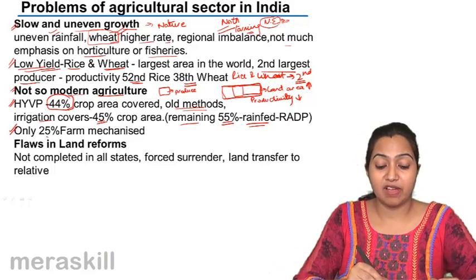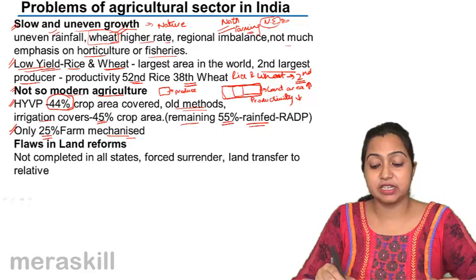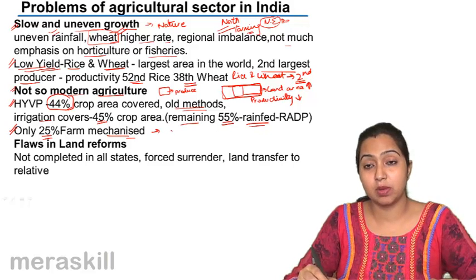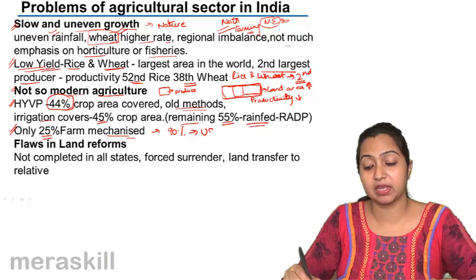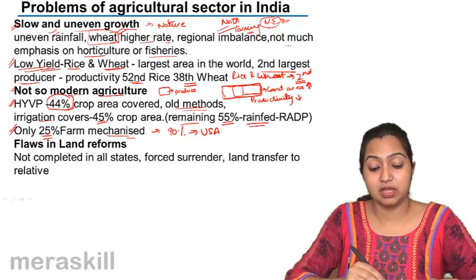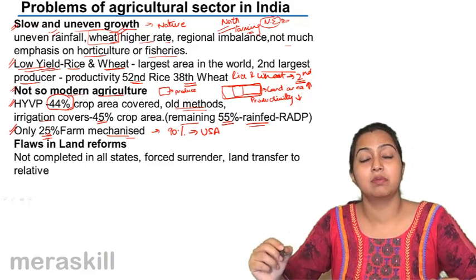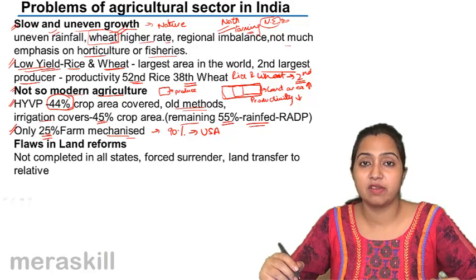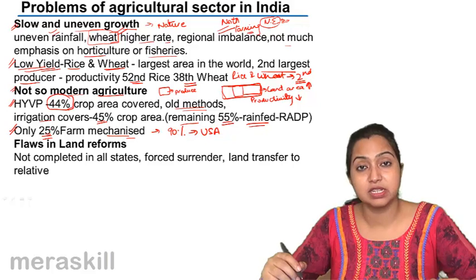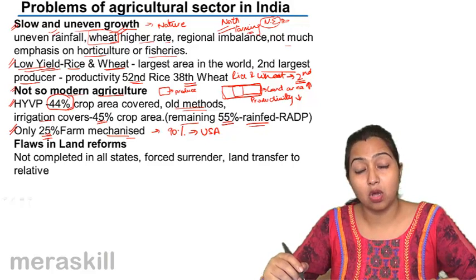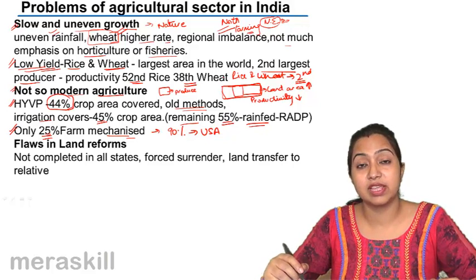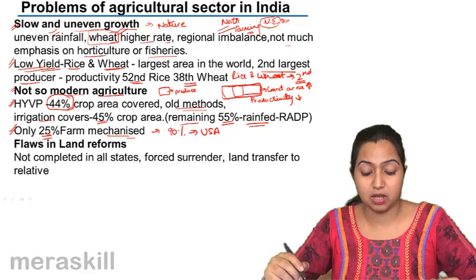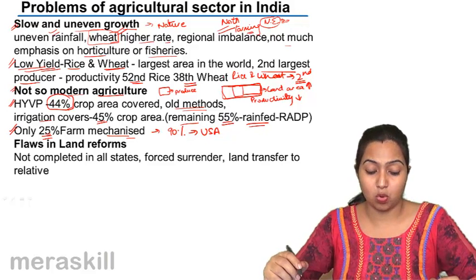Only 25% of farms are mechanized in India, whereas in America 90% of farms are mechanized. Being a primary and most important sector, only 25% of it is mechanized — the rest is still using traditional methods. There is still a long way to go.